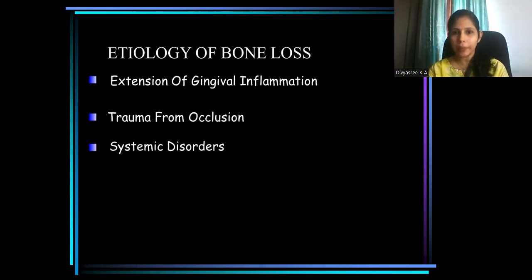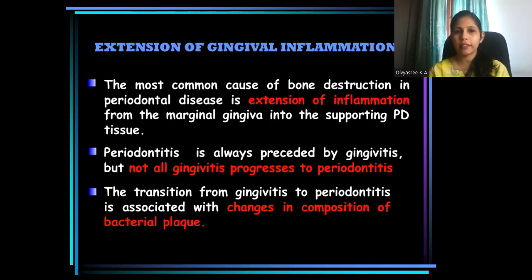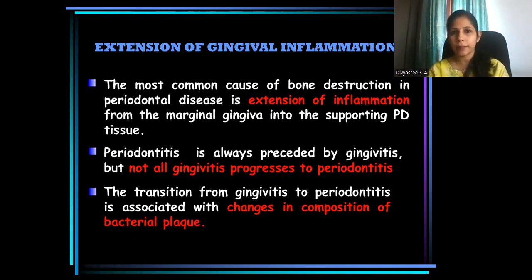How does gingival inflammation result in bone loss? Gingival inflammation occurs in response to microbial challenge in the gingival sulcus area. When the plaque and calculus causing the gingival inflammation have not been removed, the gingival inflammation gradually extends into the underlying tissues — and what we have beneath the soft tissues is alveolar bone, present just below the gingiva.